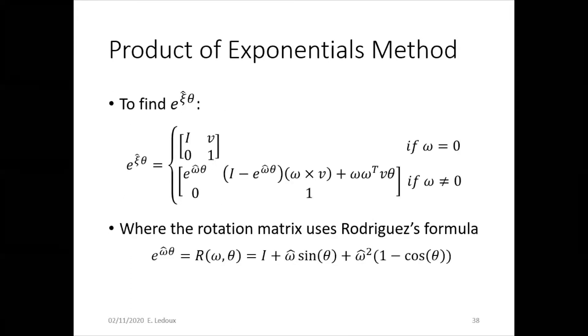To find e^(ξ̂θ), this is a little bit complicated. So if omega equals zero, it's actually simple. Just basically the identity matrix except with the velocity in the top right.